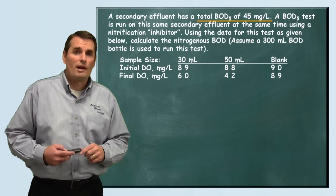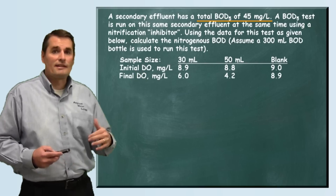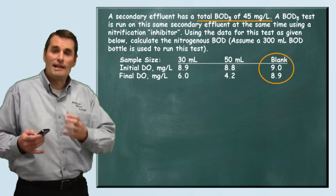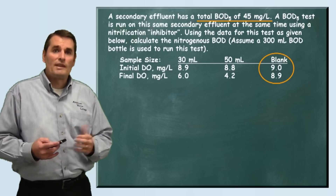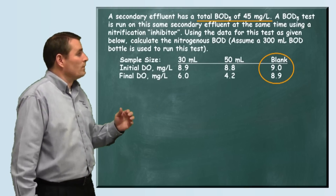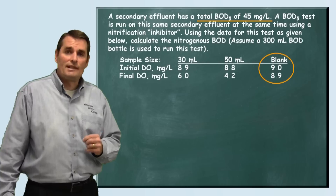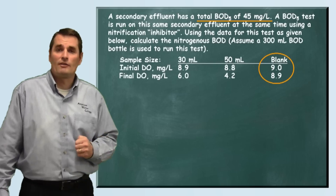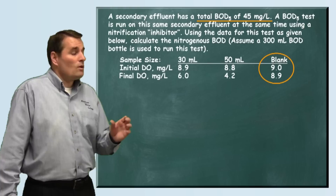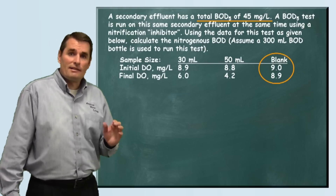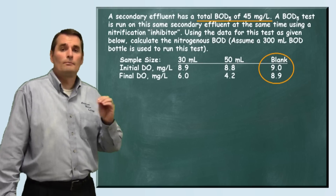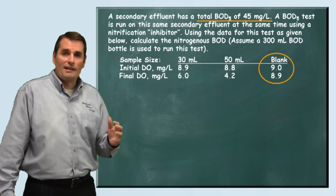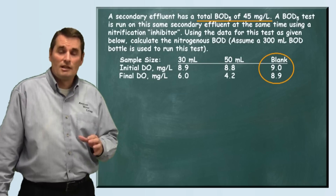Some things we need to know before we work this problem: we have to make sure that the test is a valid test. The first thing we look at is our blank. When you set this up, you'll set up a blank bottle to see if there's any depletion without adding any sample. In our problem here, the blank dissolved oxygen at the beginning was 9 milligrams per liter, and after the five-day test, we still had 8.9 milligrams per liter in the bottle. We need the depletion in the blank to be 0.2 milligrams per liter or less. Going from 9 to 8.9, we see a depletion of 0.1 milligrams per liter — so that's acceptable.